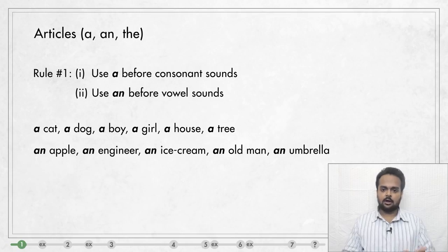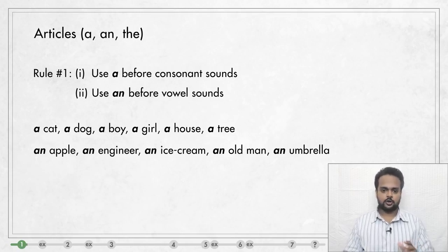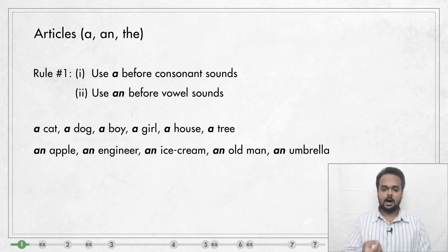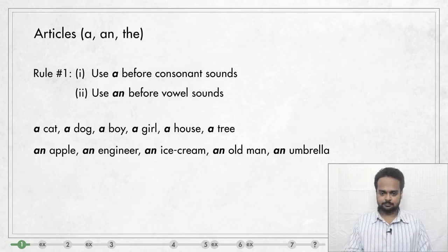So we say a cat, a dog, a boy, a girl, a house, a tree, etc. Notice that in natural speech, we don't say A — we say a, like a cat.